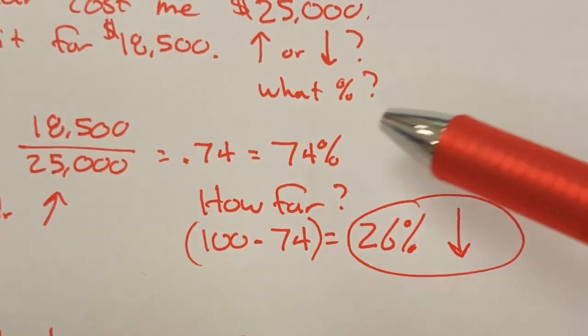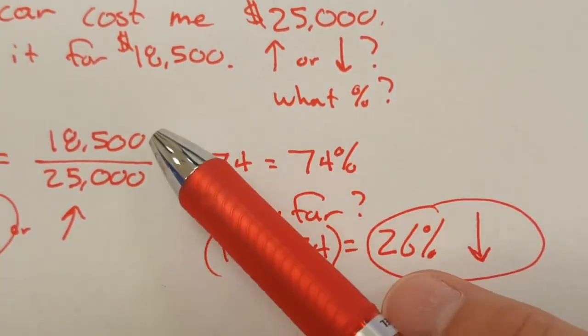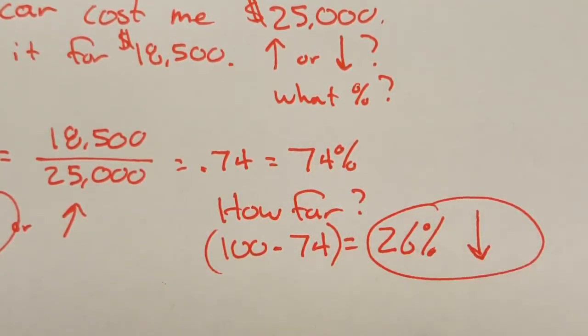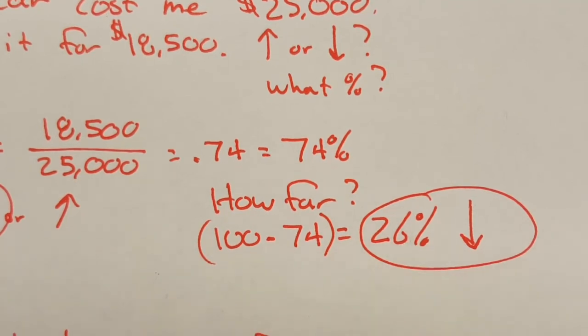Mental math again folks, if you kept 74% of the value, that's what I did, I sold it for 74% of the value, that means I lost 26% of it when I sold, okay? So again when it's under 100, you have to think to yourself, how far is it from 100?